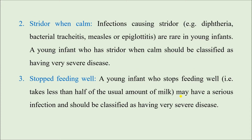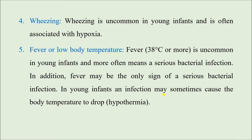Then we have stridor when the child is calm. Infections that can cause stridor — like diphtheria, bacterial tracheitis, measles, and epiglottitis — are quite rare in young infants. So any young infant with stridor when calm should be classified as having Very Severe Disease. A child that has stopped feeding well — that means taking less than half of the usual amount of milk — may have a serious infection and should also be classified as having Very Severe Disease. Wheezing is uncommon in young infants and is sometimes associated with hypoxia.